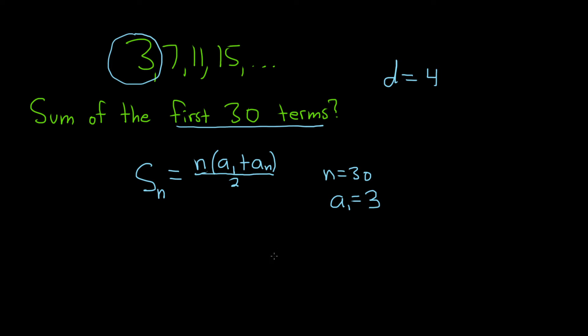So a sub 1 is equal to 3. So the only thing missing is this a sub n, which is actually a sub 30. So once we figure out the 30th term, we can take everything and plug it in and we'll have the sum of the first 30 terms of the sequence.